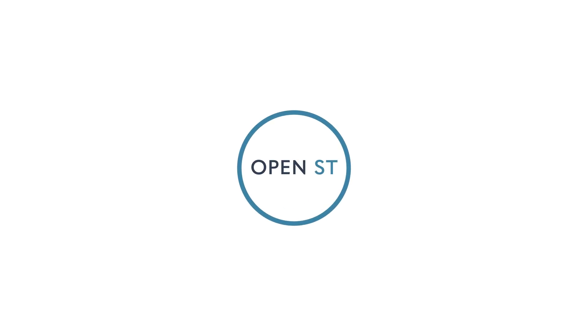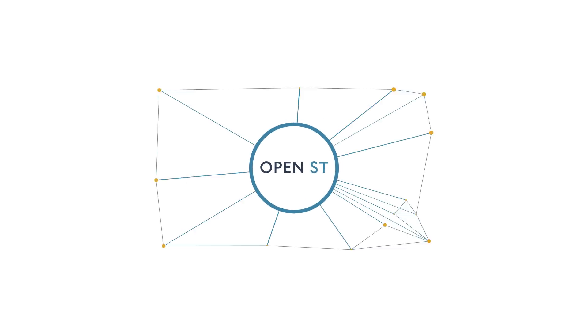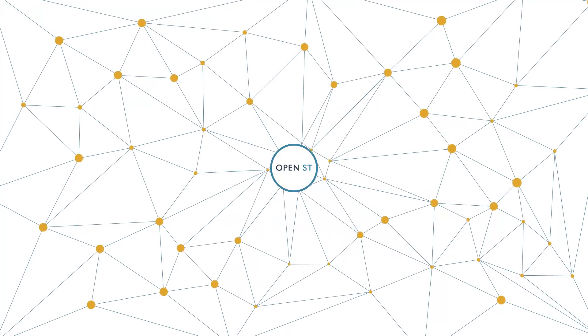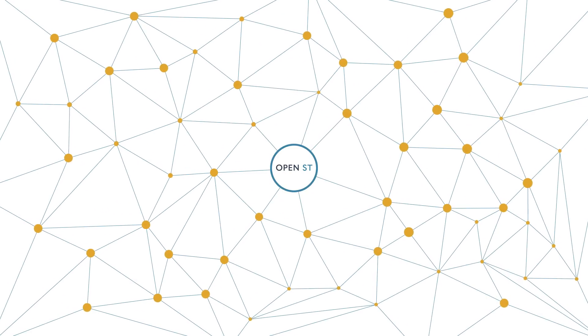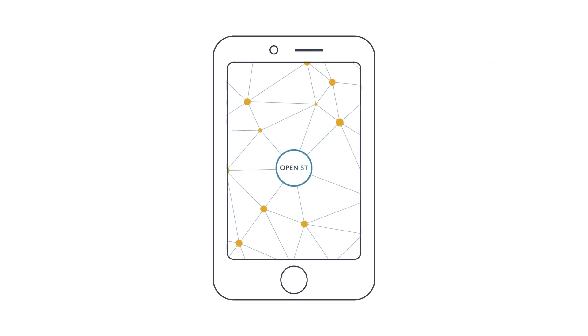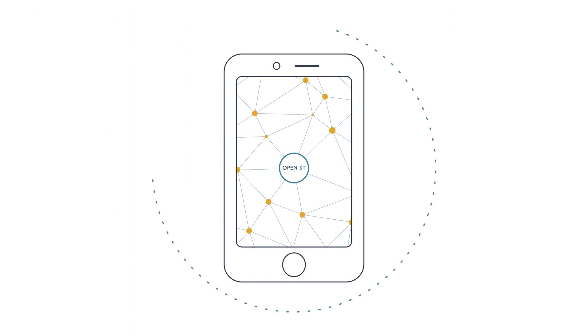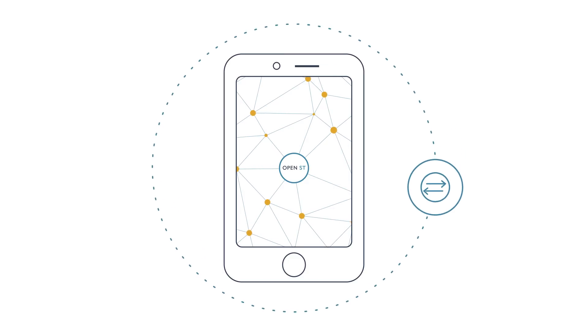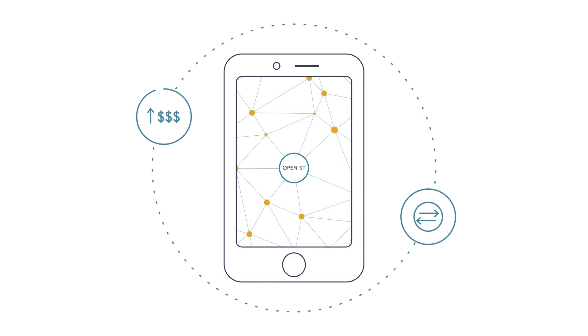OSTKit is built on OpenST, the most scalable open blockchain network. This means it can handle apps like yours — apps with high transaction volumes and high demands.